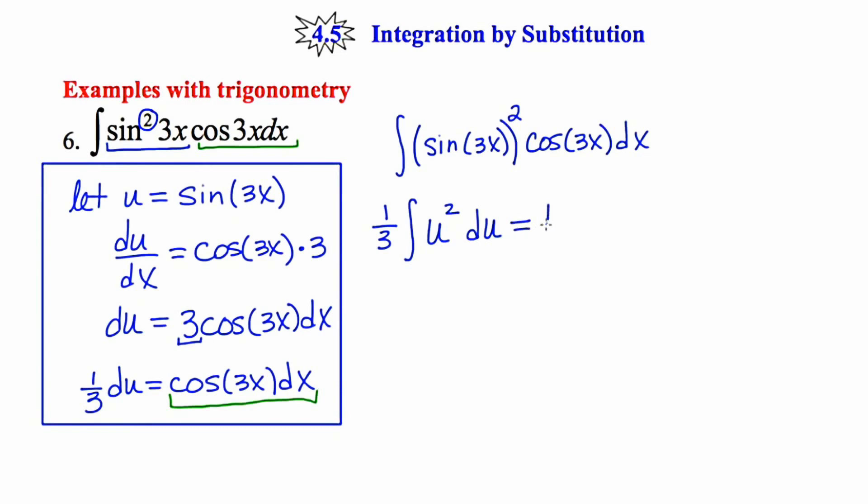In doing the integration, I'm going to leave some space, raise the power from 2 to 3, multiply by the reciprocal which would be 1/3, and not forget to put my plus c. This ends up being 1/9 u³ plus c, and then we'll finish by back substituting in for u.